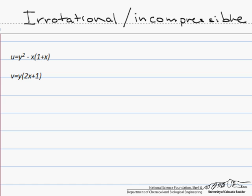So we have the x component of velocity, which is u, and the y component of velocity, which is v. And the first question is, is the flow irrotational?